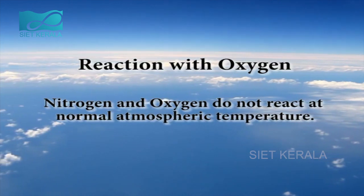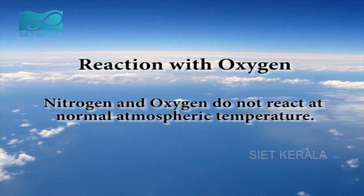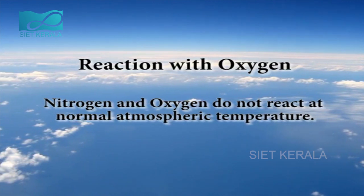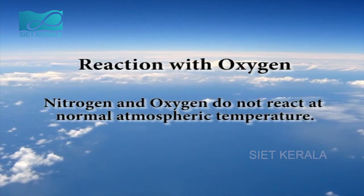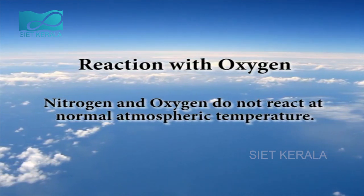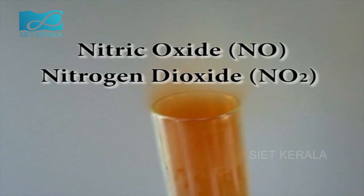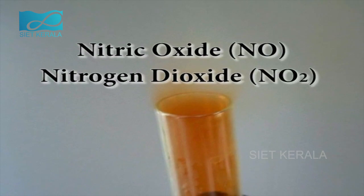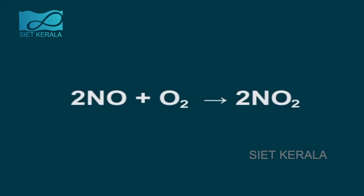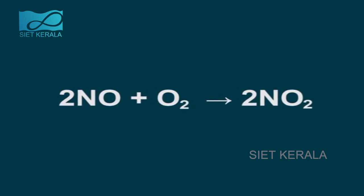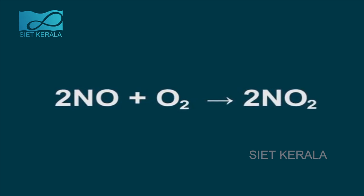Nitrogen and oxygen do not react at normal atmospheric temperature, but in the heat of a combustion engine, they react to produce nitrogen oxides — nitric oxide (NO) and nitrogen dioxide (NO2): 2NO + O2 → 2NO2.